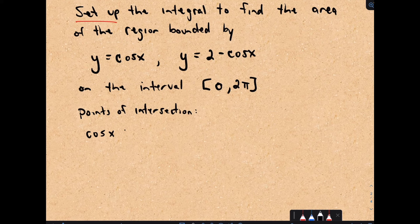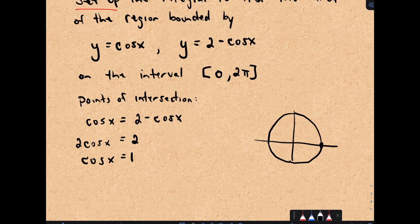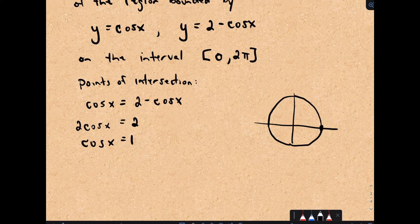To find points of intersection, we set the two functions equal: cos x equals 2 minus cos x. Adding cos x to both sides gives 2 cos x equals 2, so cos x equals 1. Where does cos x equal 1 on the unit circle from 0 to 2 pi? Cos x equals 1 at 0, and the next place is at 2 pi. So there are no points of intersection between these two functions on the interval from 0 to 2 pi.